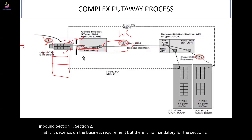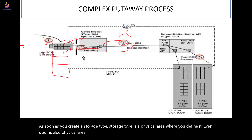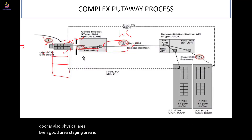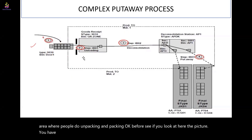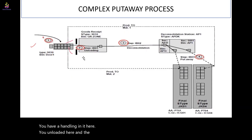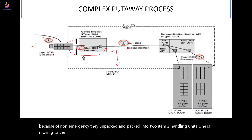A storage type is a physical area you define in EWM — even a door is a physical area, a goods receipt/staging area is a physical area, and a deconsolidation work center is also a physical area where people do unpacking and packing. As shown in the picture, the handling unit is unloaded in the staging area, then moves to the work center where, due to non-homogeneous items, it is unpacked and repacked into two handling units, each moving to its designated storage area or rack.